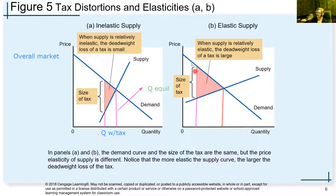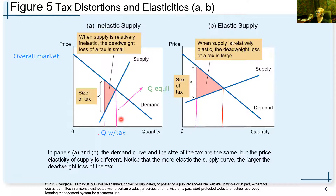Going back to some of the discussions we've had in class — why do we tax what we tax? We tax them because they're more inelastic, so people will continue to buy them, which generates greater tax revenue for the government.